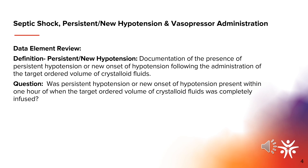Let's do a data element review. Persistent or new hypotension is present when the full target volume of crystalloid fluids have been administered, and within the hour following completion, there are two consecutive hypotensive blood pressure readings. If multiple blood pressures are documented within that hour, review the last two consecutive blood pressures within the acceptable time frame. When determining the onset time of persistent or new hypotension, use the time of the second hypotensive reading.